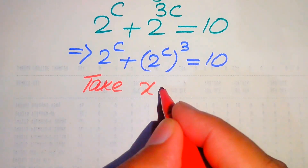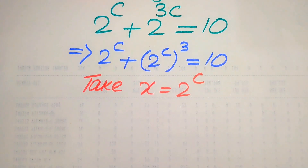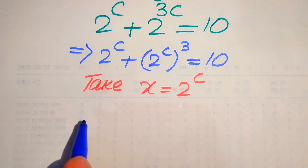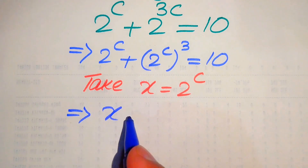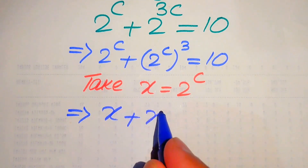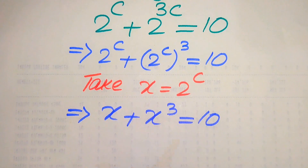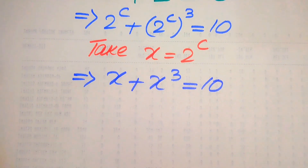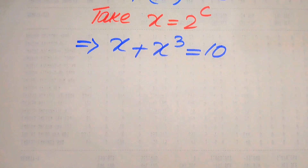Here we make a substitution to convert this into cubic form. We take x equals 2 to the power of c. When we substitute x equals 2^c, our above equation is written as x plus x cubed equals 10. In the next step, this equation becomes a cubic equation in the variable x.